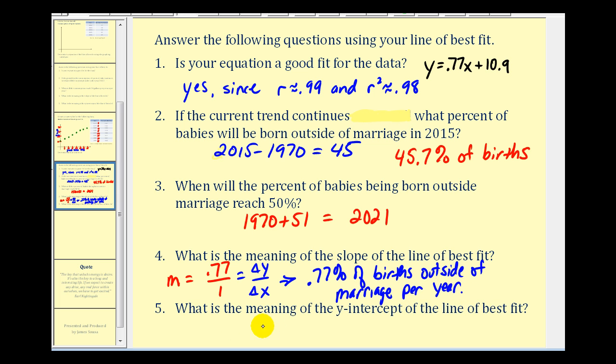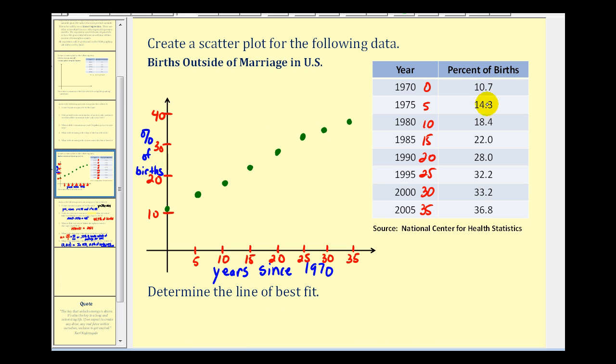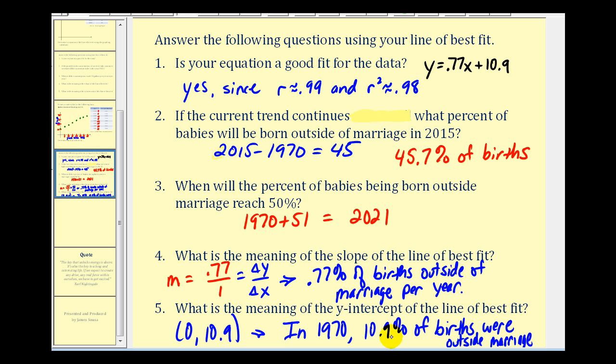And the last question, what is the meaning of the y-intercept of the best fit line? Well, the y-intercept would be the point zero, 10.9. Well, x is zero represents the year 1970, or our base year. And 10.9 would represent the percent of births outside of marriage. So in 1970, according to the model, 10.9% of births were outside of marriage. And we actually had this data from the table. The data told us that it was only 10.7%. So what we're noticing here is that there is a margin of error with our model, and that's just showing that with any model there's going to be limitations.